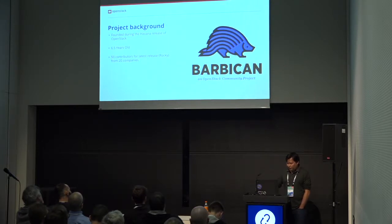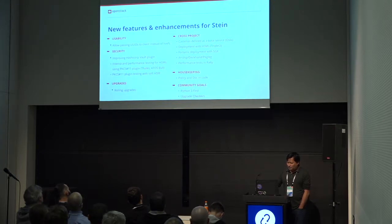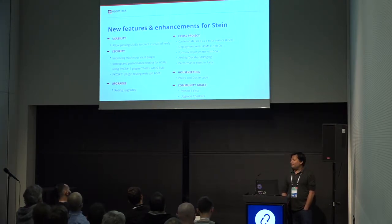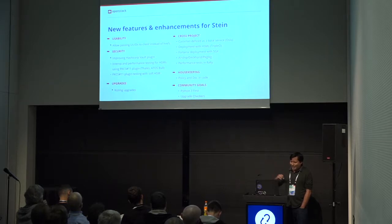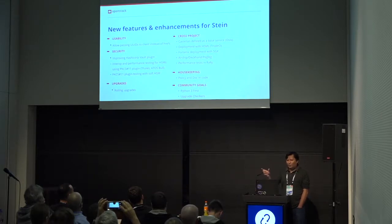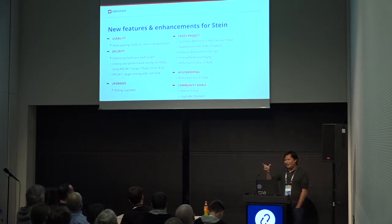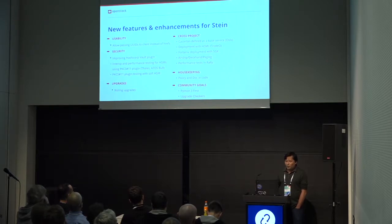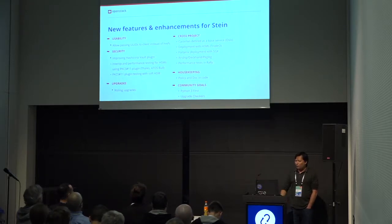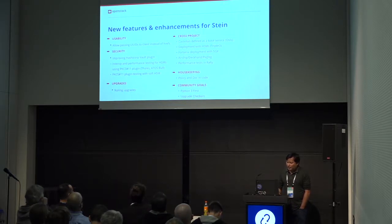For Stein, there have been a number of new features. Most notably, for usability: for the longest time our client required you to provide a full reference — an href with the full HTTP path and a UID at the end. Now there is an ability to just provide the UID, and Keystone will figure out where that secret is coming from.